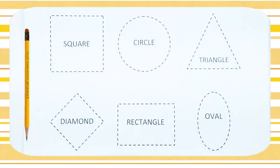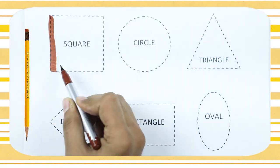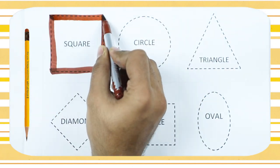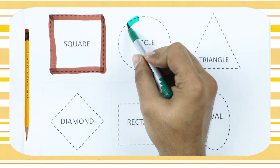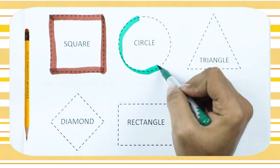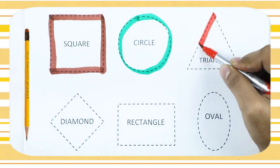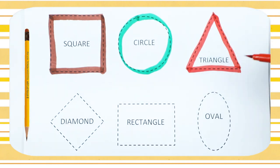It's a square. We draw a square with brown color — square! It's a circle with green color, a round circle.